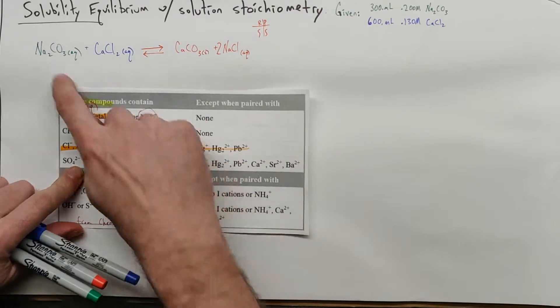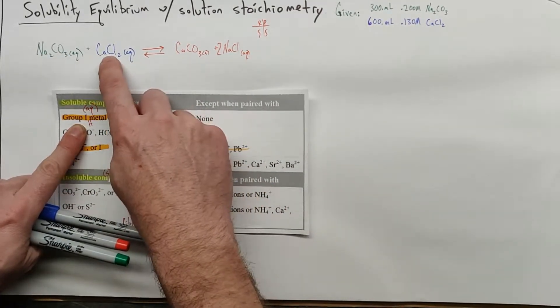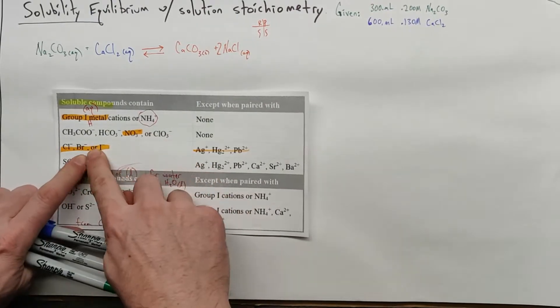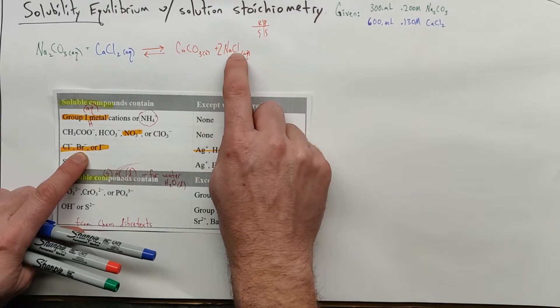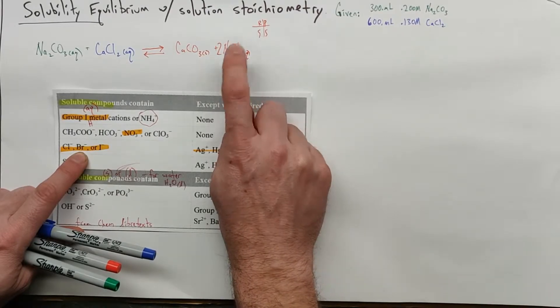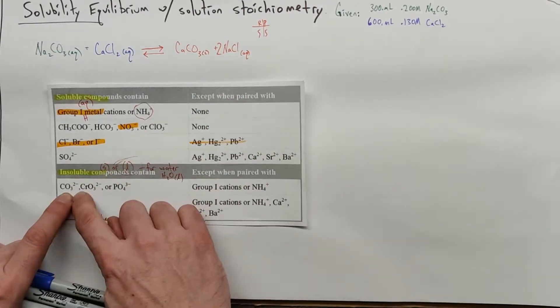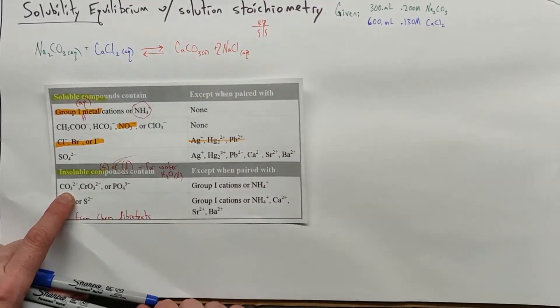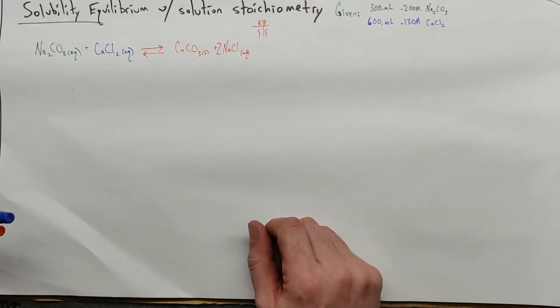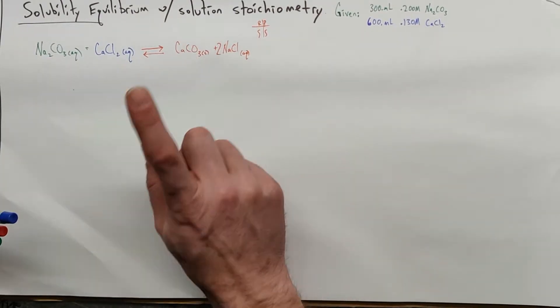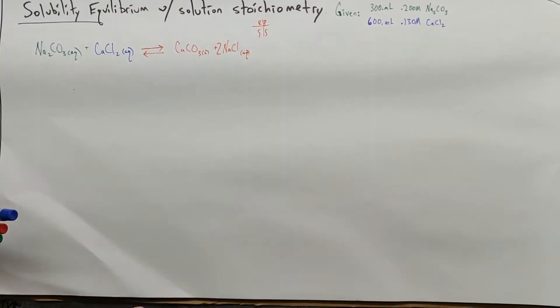When we look at our solubility rules, sodium carbonate has a group 1 metal, so we expect it to be soluble. Calcium chloride has chlorine without lead, silver, or mercury, so we expect that to be soluble. Sodium chloride has a group 1 metal and chlorine without lead, silver, or mercury, so we expect it to be soluble. But then we have calcium carbonate, and carbonates tend to be insoluble unless it's with group 1 or NH4. Some tables you might see slightly soluble for calcium carbonate, but we can get a quantitative picture of that if we look at the Ksp.